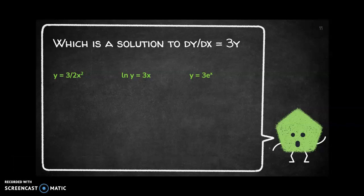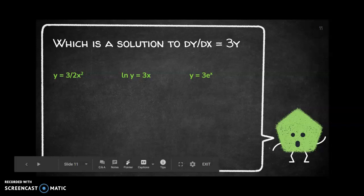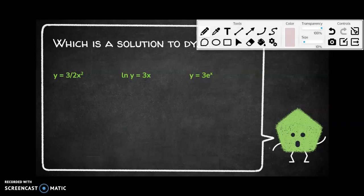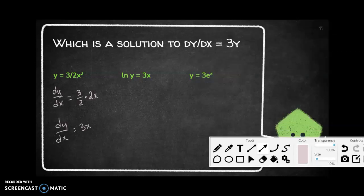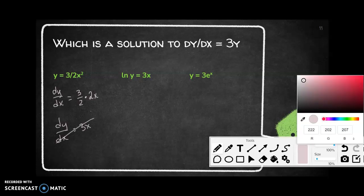We have the differential equation dy/dx = 3y, and we're trying to verify which of several candidates is the solution. Starting with y = (3/2)x²: taking the derivative gives dy/dx = (3/2)(2x) = 3x. But we need dy/dx to equal 3y, and x is not equal to y here, so this one is not correct.